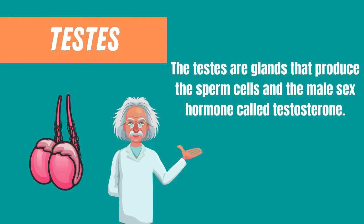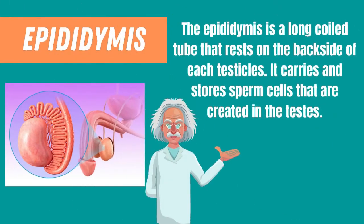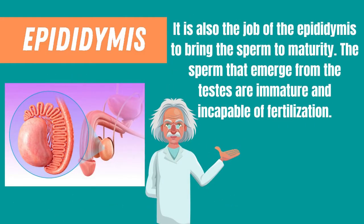The testes are glands that produce the sperm cells and the male sex hormones called testosterone. The next one is the epididymis. The epididymis is a long, coiled tube that rests on the backside of each testicle. It carries and stores sperm cells that are created in the testes. It's also the job of the epididymis to bring the sperm to maturity, as the sperm that emerge from the testes are immature and incapable of fertilization.